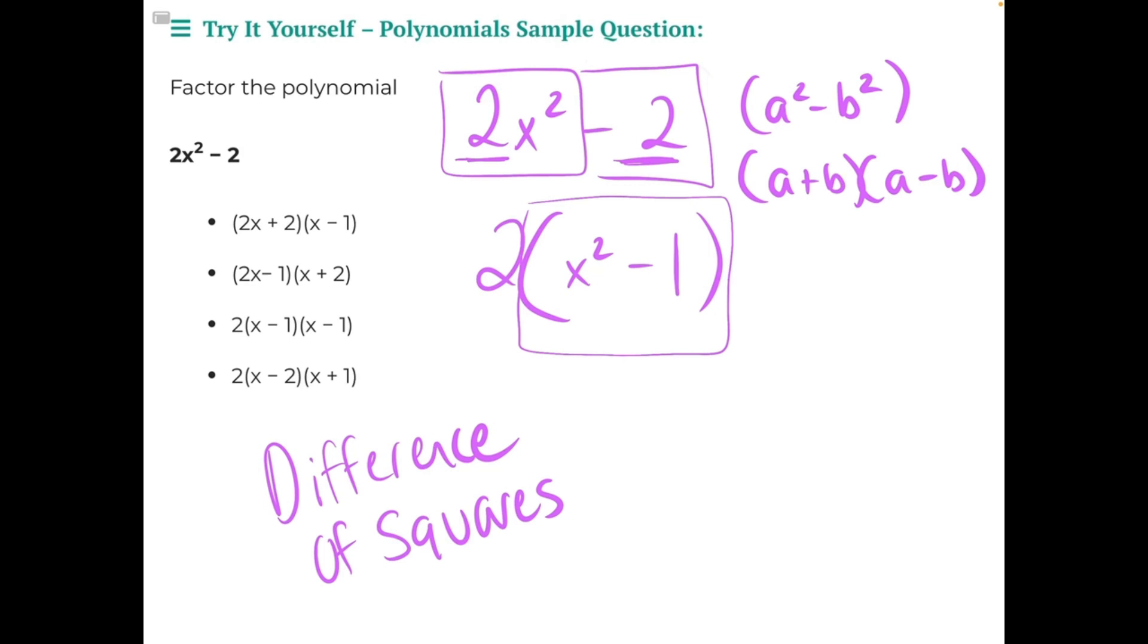And what would happen if you were to use distributive property or the FOIL method to multiply this back out, you would have your a times a as your first step, your front, and then your last step, you'd have b squared. And then what would happen in the middle here is you would have a positive b times a and then a negative a times b. So you'd have negative ab and then positive ab. And those would just cancel each other out, leaving behind the a squared minus b squared.